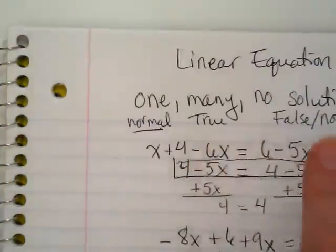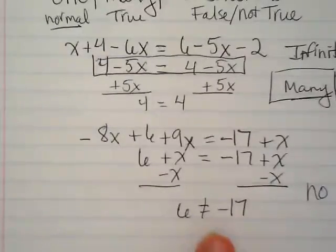I kind of think of these as the normal ones, or the ones we encounter the most often. And then there's some rare cases where anything can be true for it or nothing will work because when we simplify, we end up with something that just isn't true. This is false. 6 does not equal negative 17.